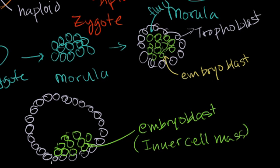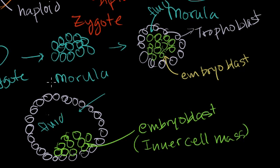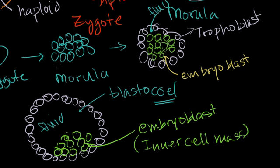The inner cell mass is what's going to turn into the organism. In a mammalian organism — and we are mammals — we call this structure the blastocyst. The fluid-filled cavity that forms here is called the blastocoel — a very non-intuitive spelling. And once this is formed, the entire structure is called a blastocyst.